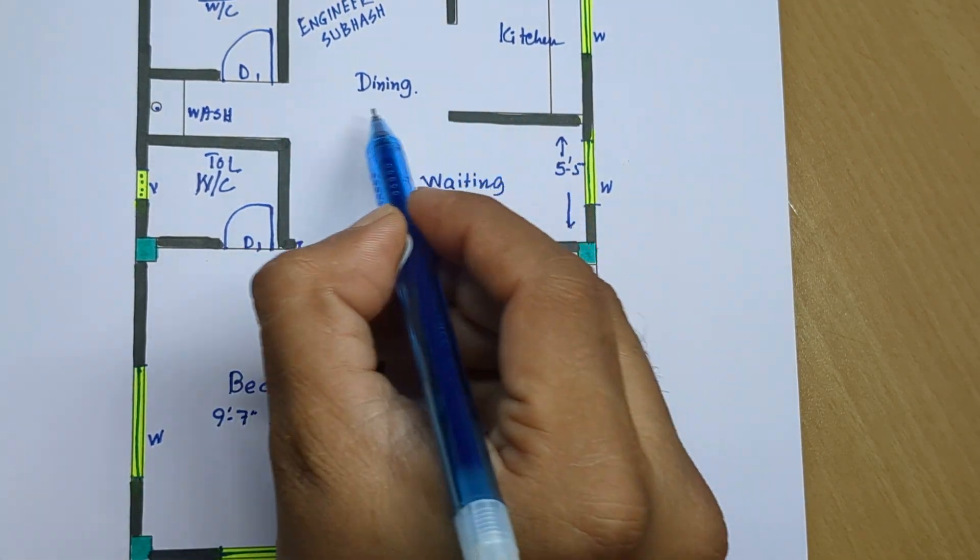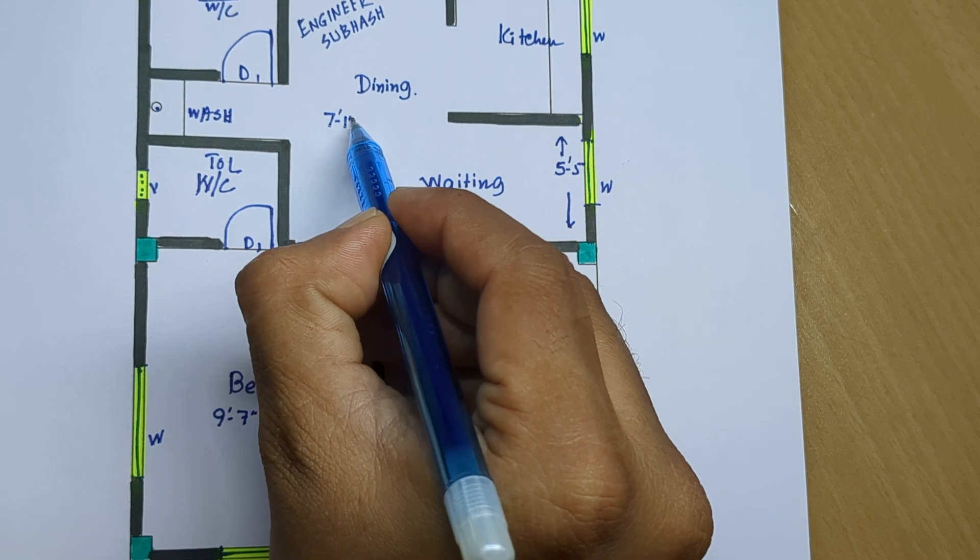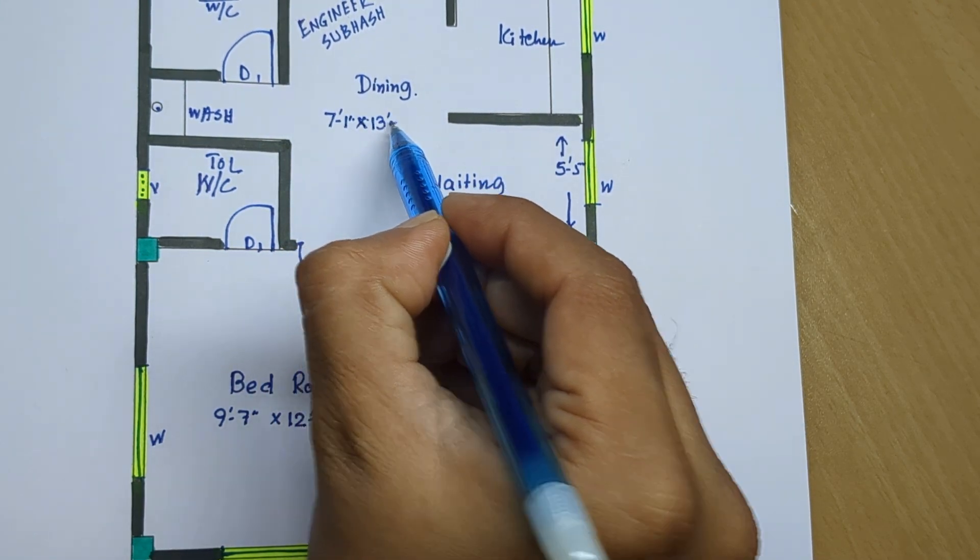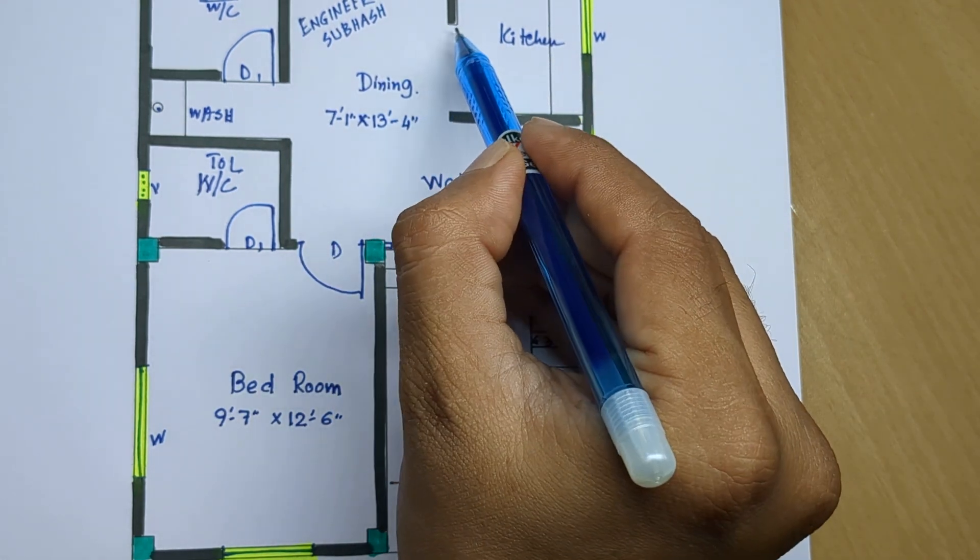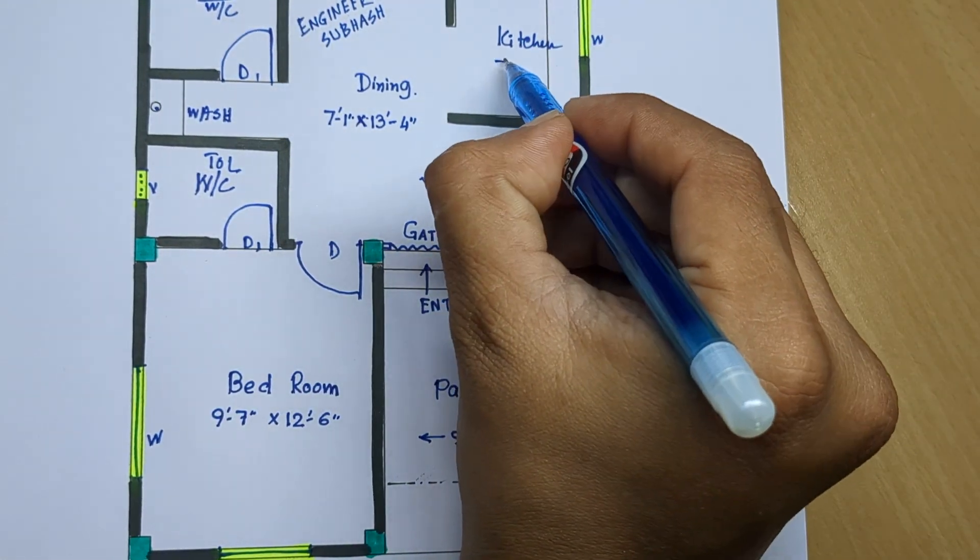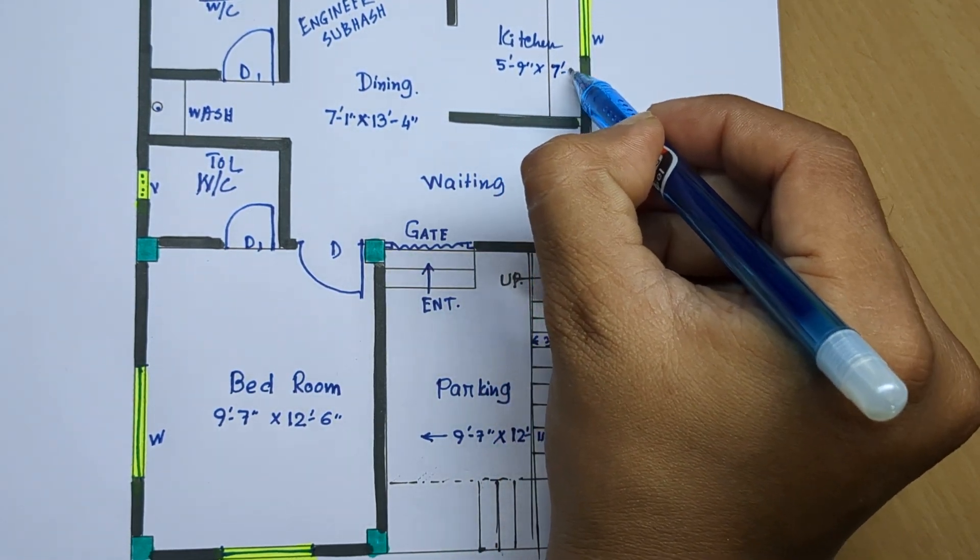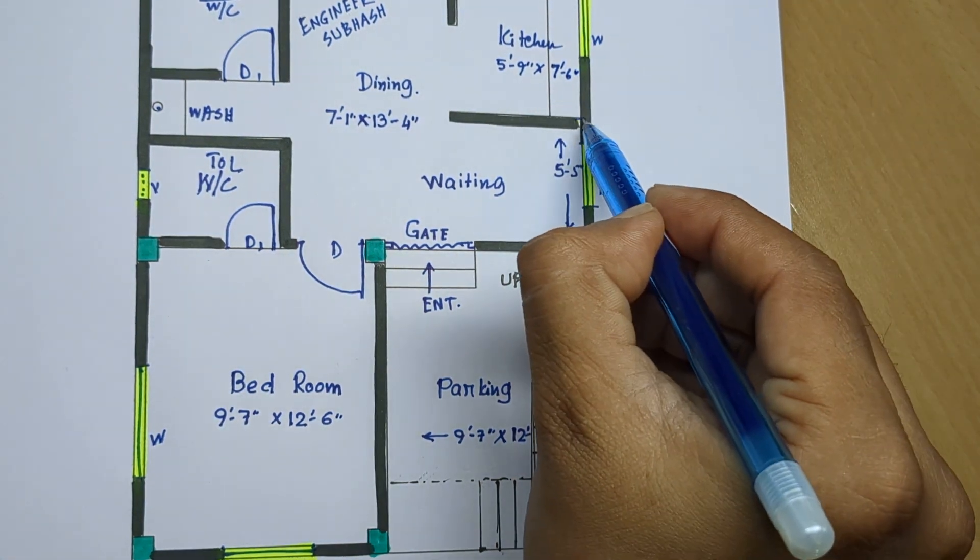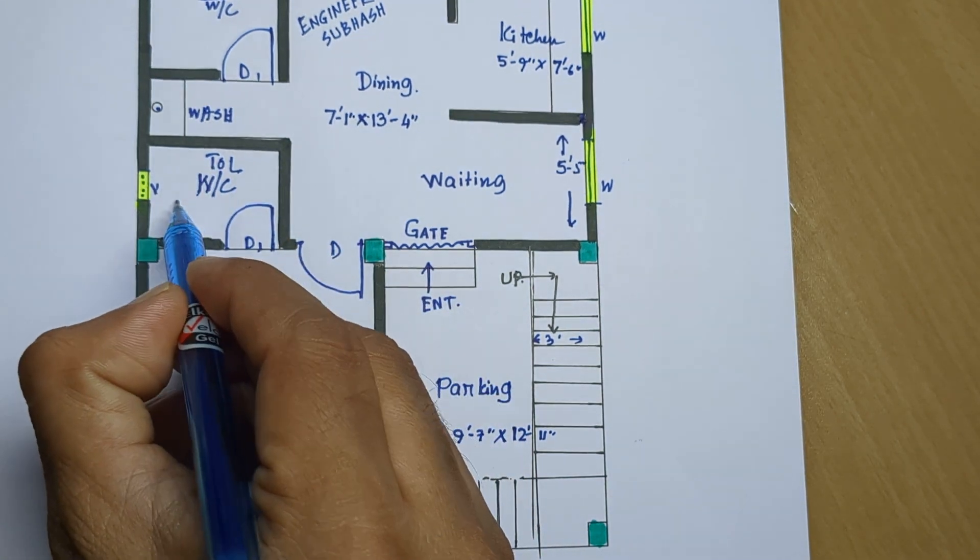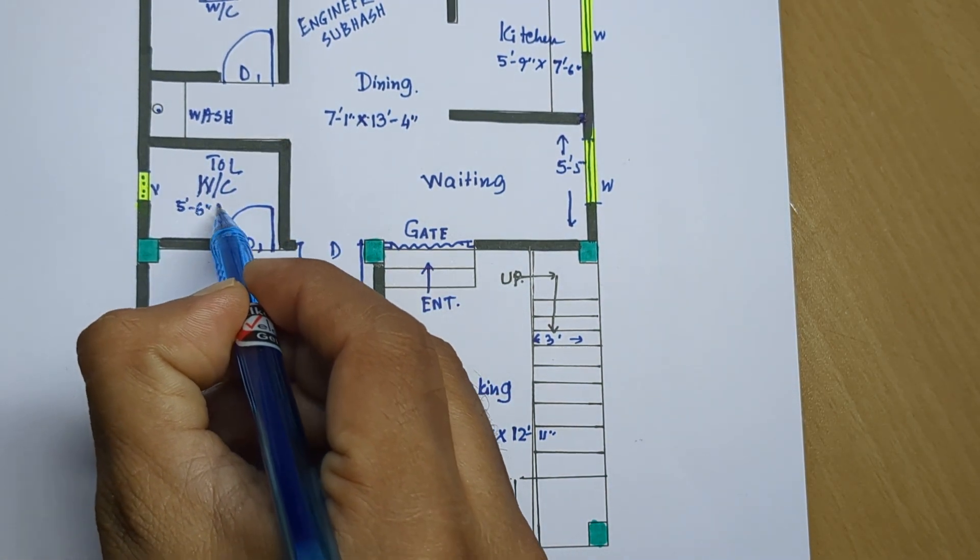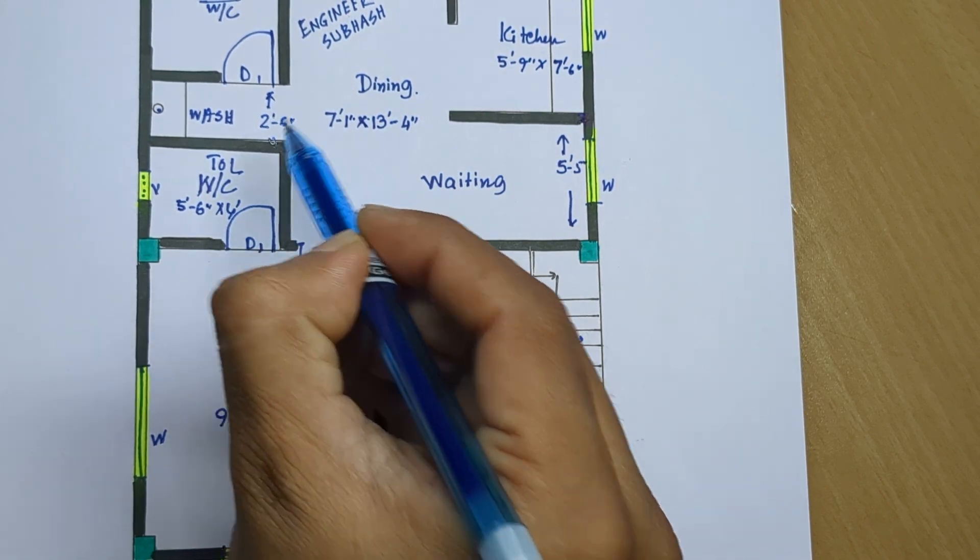5ft 5 inch. 7ft 1 inch and 13ft 4 inch, kitchen area 5ft 9 inch and 7ft 6 inch. Next, 5 feet 6 by 4 feet, 2 feet 6 inch wide.